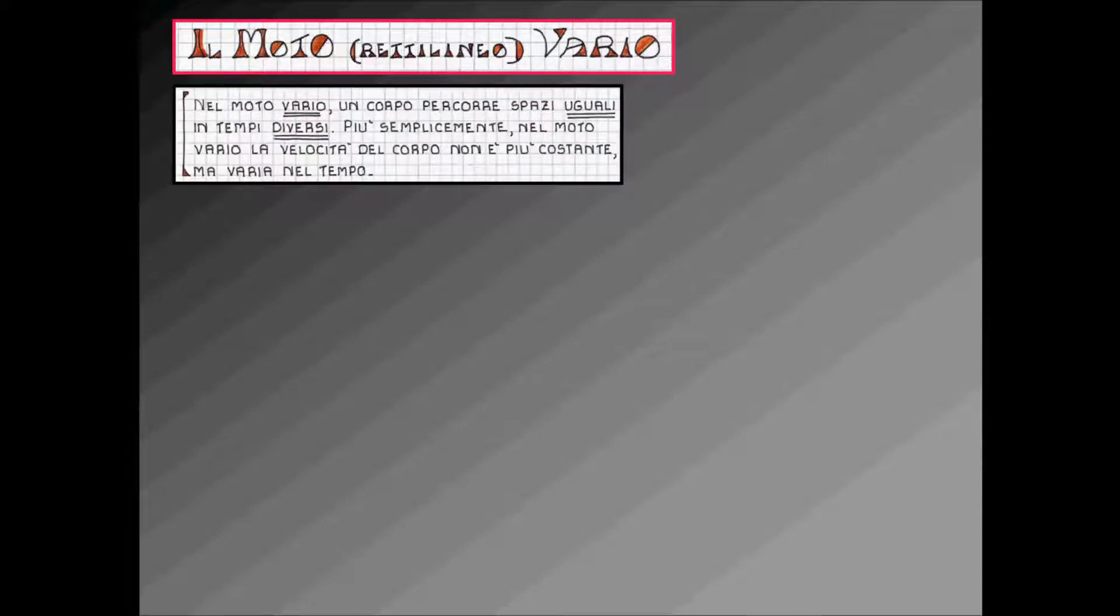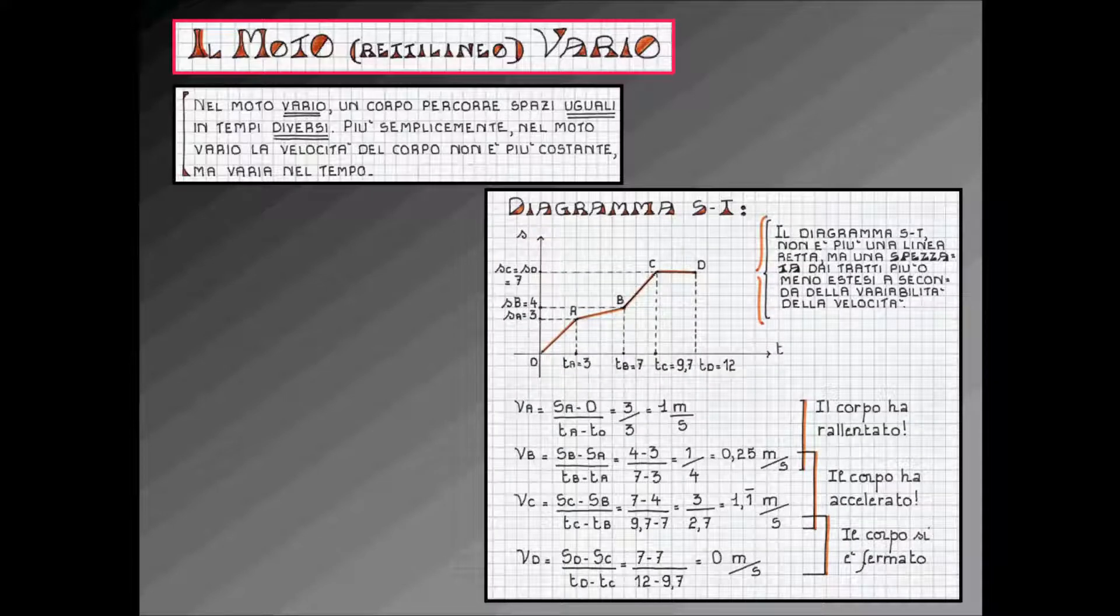Nel moto vario, un corpo percorre spazi uguali in tempi diversi. Più semplicemente, nel moto vario la velocità del corpo non è più costante, ma varia nel tempo, come ci mostra anche il diagramma spazio-tempo sottoriportato.